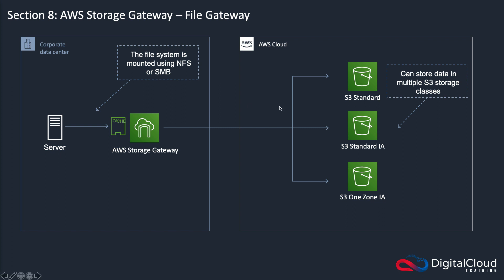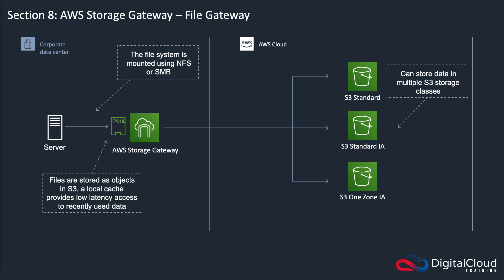The data can then be stored in multiple storage classes in the AWS cloud: S3 Standard, Standard Infrequently Accessed, or One Zone Infrequently Accessed. Files are stored as objects in S3, but they're presented as file systems within the Storage Gateway. A local cache provides low-latency access to recently used data — you hit the cache first, and if the data isn't there, it's retrieved from S3.